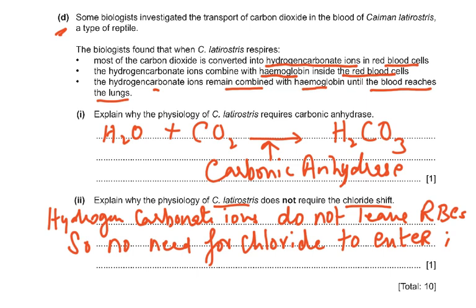For the second part: this reptile does not require the chloride shift. The chloride shift normally occurs when hydrogen carbonate ions leave the red blood cell and chloride ions move in to maintain electrical neutrality — if 100 negative bicarbonate ions moved out, 100 chloride ions moved in. But here, hydrogen carbonate ions bind to haemoglobin and do not leave the red blood cell, so there is no need for chloride ions to enter to maintain electroneutrality.